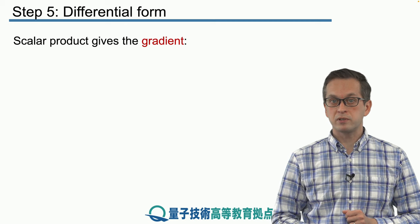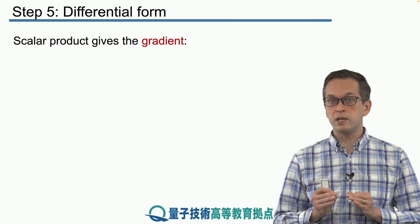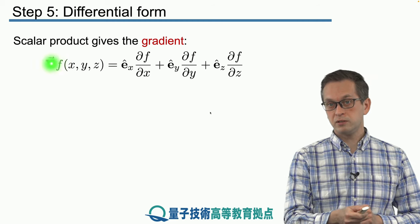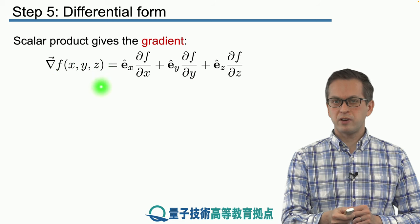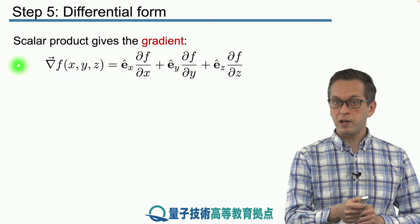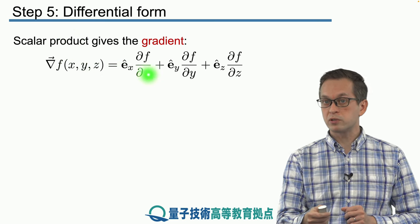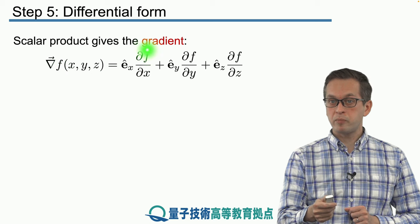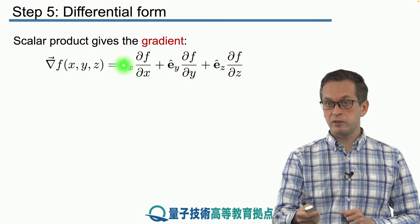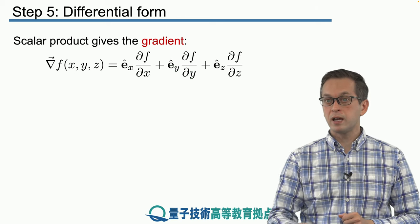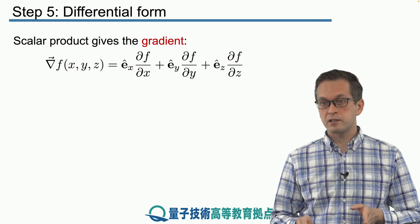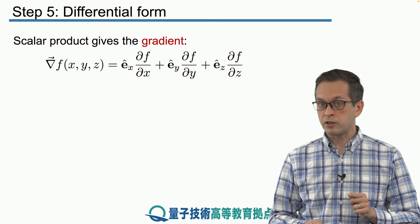First, we apply the del operator to a scalar field — this is known as the gradient. For a function f of variables x, y, and z — called a scalar field — applying the vector differential operator produces another vector. We take the partial derivative of f with respect to x for the x component, with respect to y for the y component, and with respect to z for the z component, and add them all together. The magnitude of this gradient vector gives the rate of change of the function f in that direction.